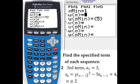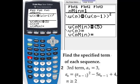It will be equal to parentheses u sub n minus 1, then square, minus 5 times u sub n minus 1.